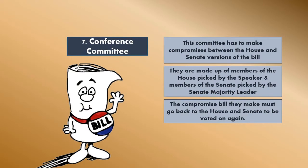If we have been very lucky and our bill has made it through steps one through six in the House of Representatives, and we are insanely lucky and that bill has somehow made it through steps one through six in the Senate, if it has made it through the House and the Senate, finally we can head to step seven, which is a conference committee. The conference committee's job is to make compromises between the House and the Senate versions of the bill.